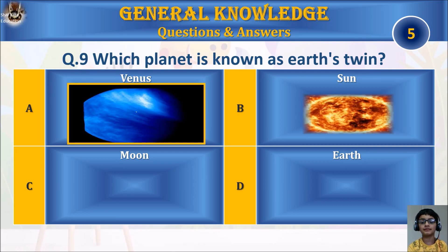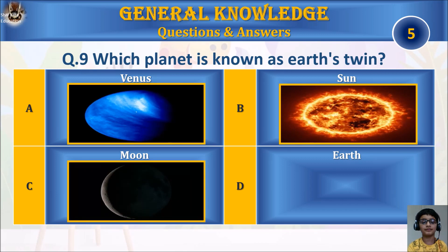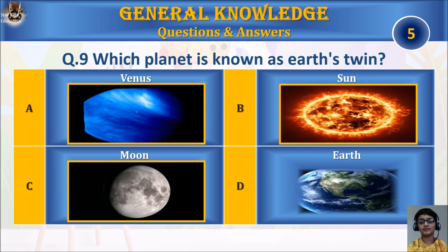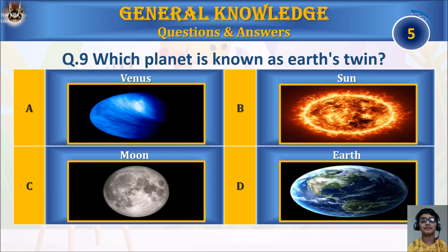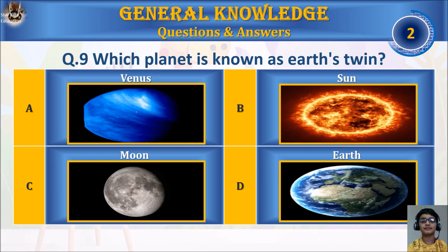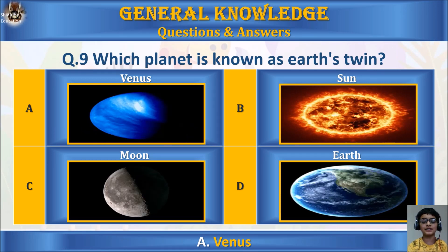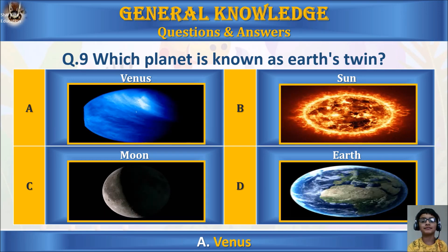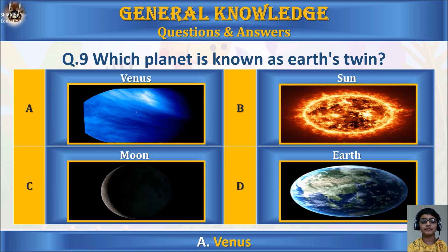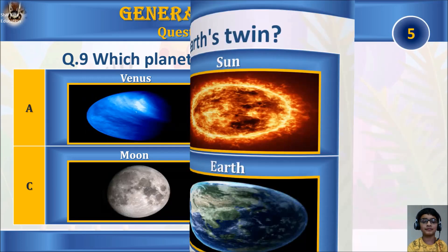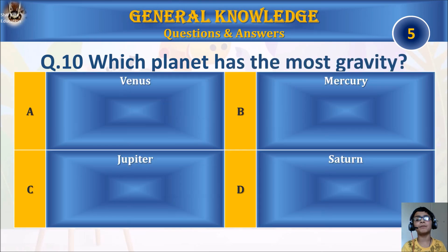Question 9: Which planet is known as Earth's twin? A. Venus, B. Sun, C. Moon, or D. Earth? Your time starts. The answer is A. Venus.